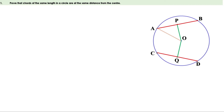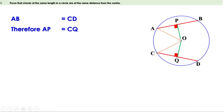Let us join OA and OC. Since OP and OQ are perpendicular to the chords, angles P and Q are right angles. Therefore these two triangles are right-angle triangles. Given that these two chords are of the same length — that is AB equals CD — AP is half AB and CQ is half CD. Since AB and CD are equal, half AB and half CD are also equal, which means AP equals CQ. OA and OC are radii of the circle, therefore they are also equal.